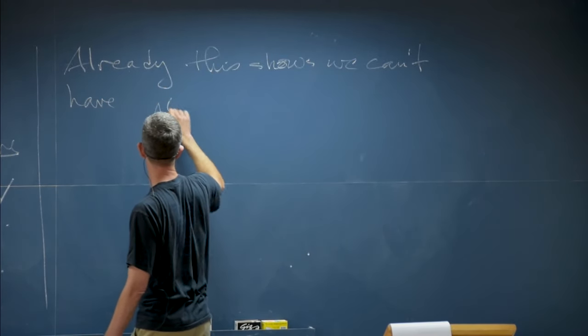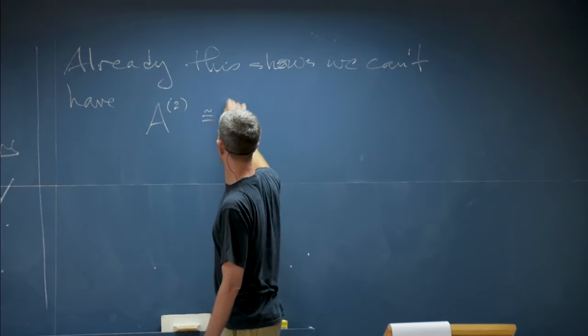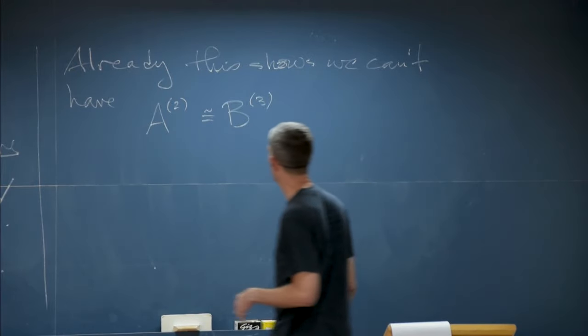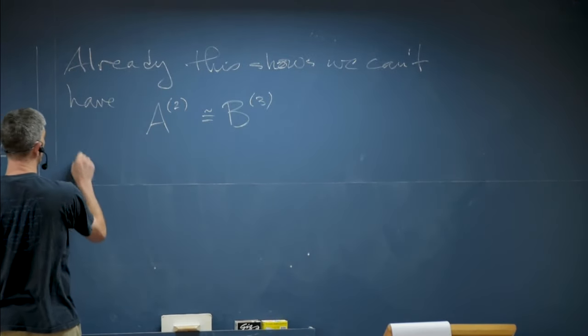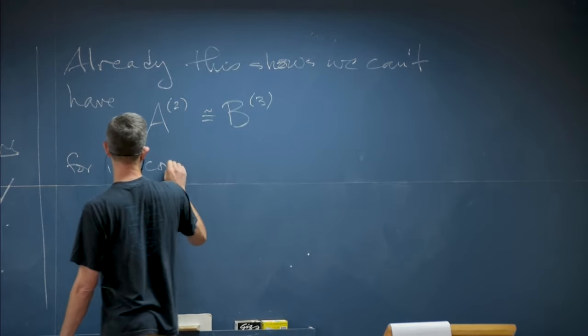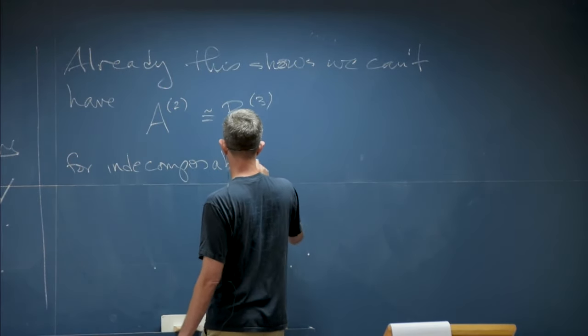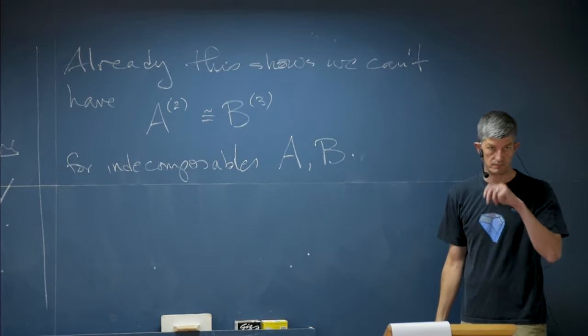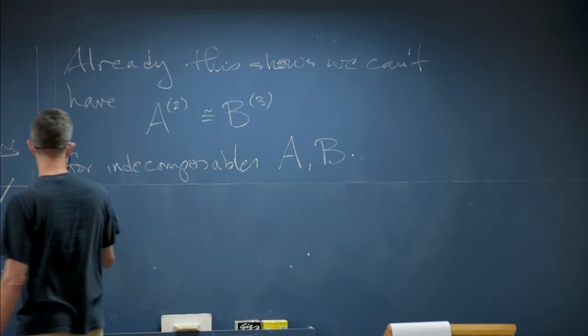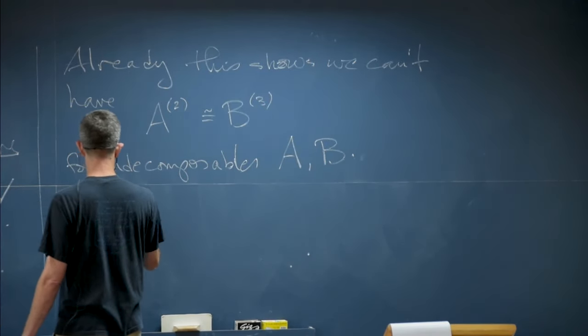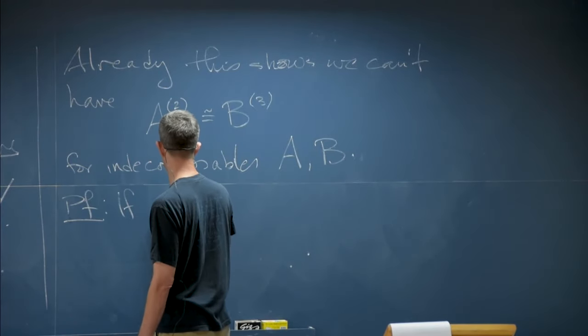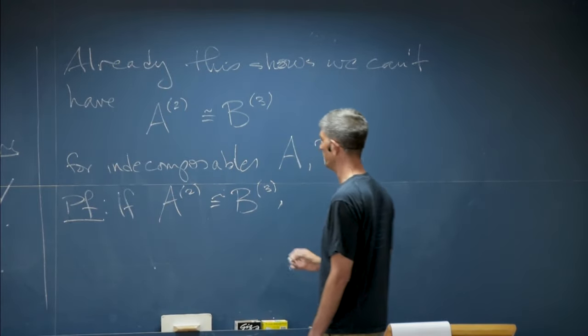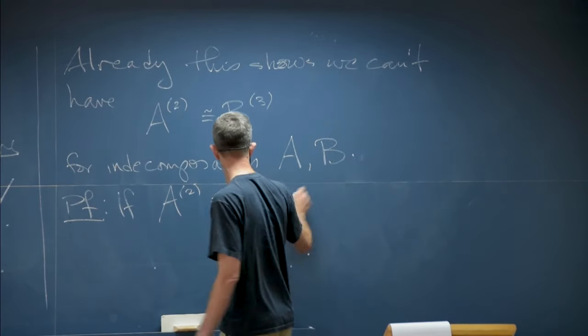So this semi-group homomorphism from mod R into a free one is not just any old homomorphism, it's a very particular kind, and this already allows us to rule out one of the kinds of bad behavior. We cannot have this sort of behavior: two copies of A isomorphic to three copies of B for indecomposables A and B.